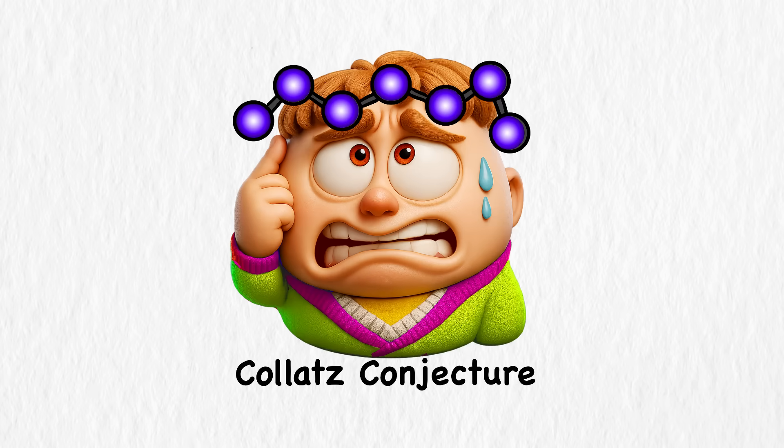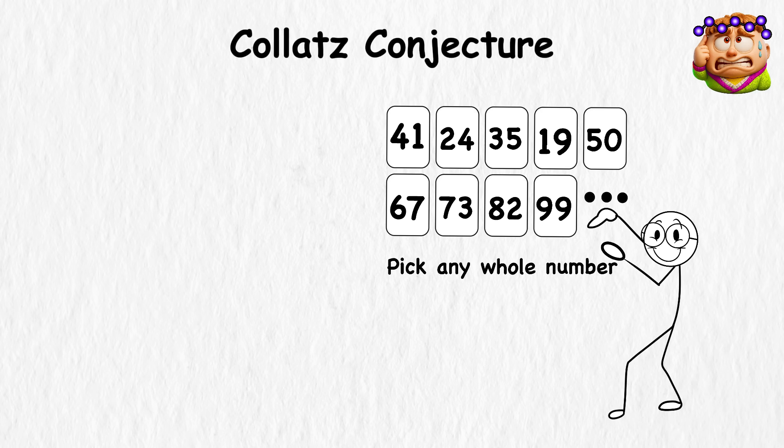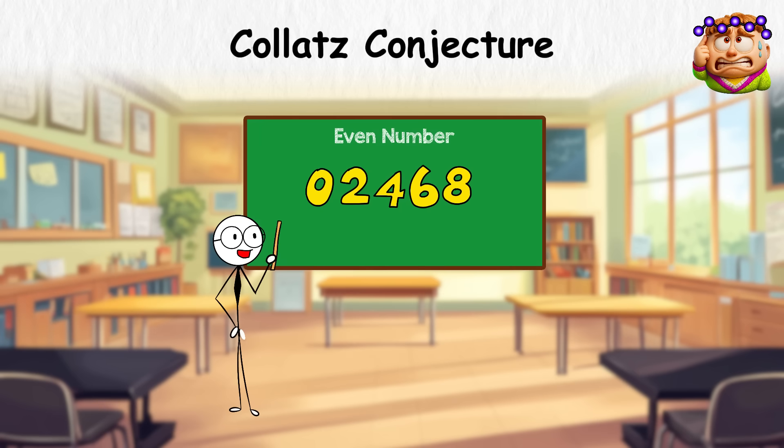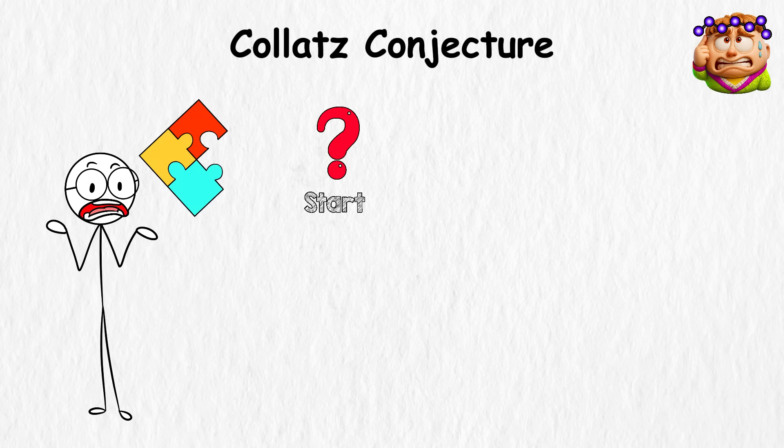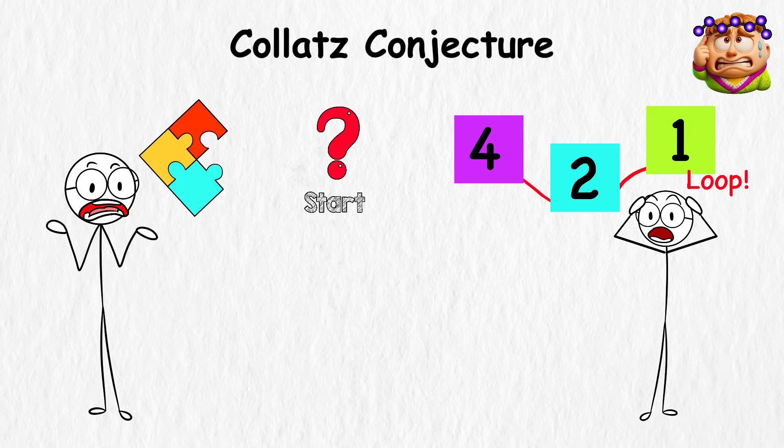Collatz conjecture. Pick any whole number. Doesn't matter if it's tiny or massive. If it's even, split it in half. If it's odd, triple it and tack on one. Then take the result and do the same thing again. And again. Before long, you'll notice a strange pattern. No matter where you start, the sequence always crashes into the same loop. Four, two, one, four, two, one, forever.